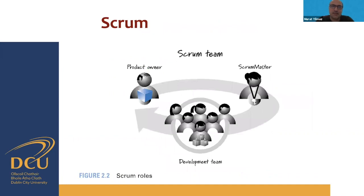In Scrum there are three main roles: the Scrum Master, the Development Team, and the Product Owner. The Product Owner can be a customer or a stakeholder who requires functionality. The Scrum Master coaches the team and is one individual involved with the team. Teams need to be more self-organized compared to the conventional form, and the development team reports back to the product owner with the product.